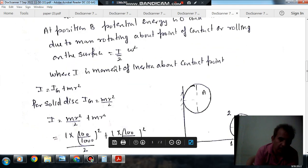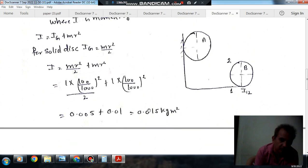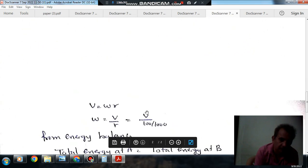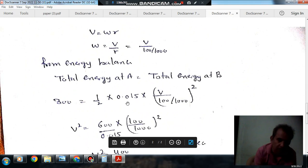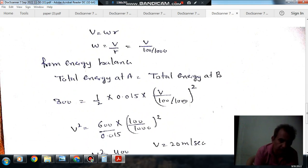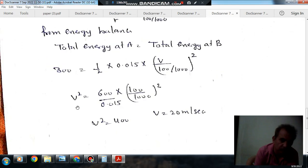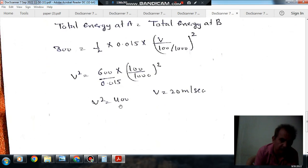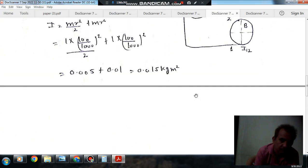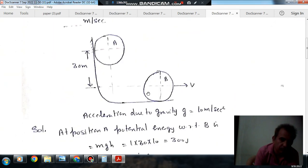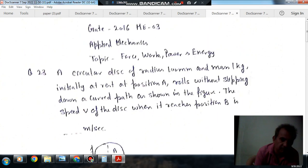Okay, so now the kinetic energy is half I omega squared, and I is this value when omega is this value. So half into 0.015 into V by 100 by 1000 whole squared. So V squared comes out as 400 and V comes out as 20 meters per second. The velocity is 20 meters per second.